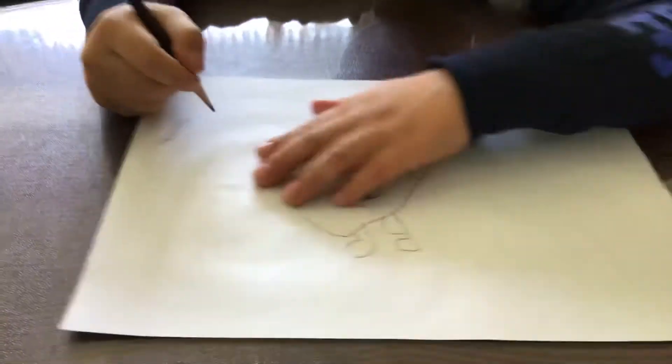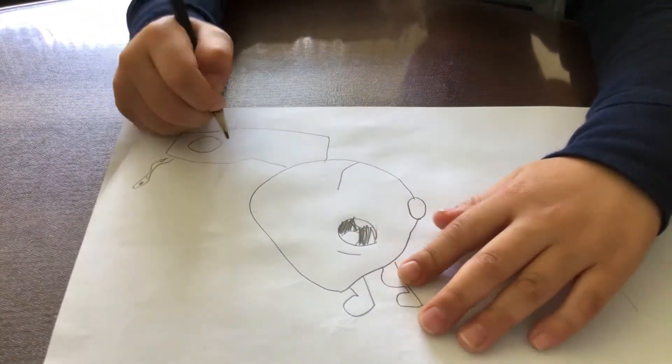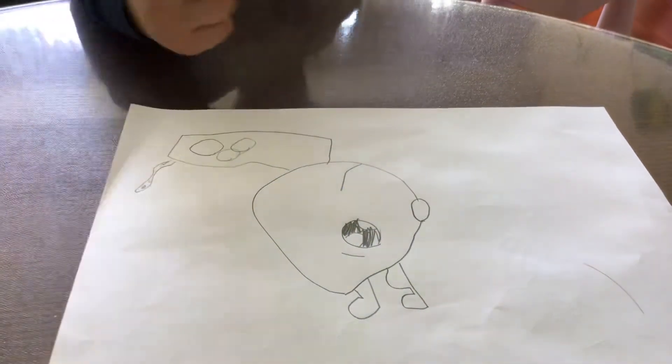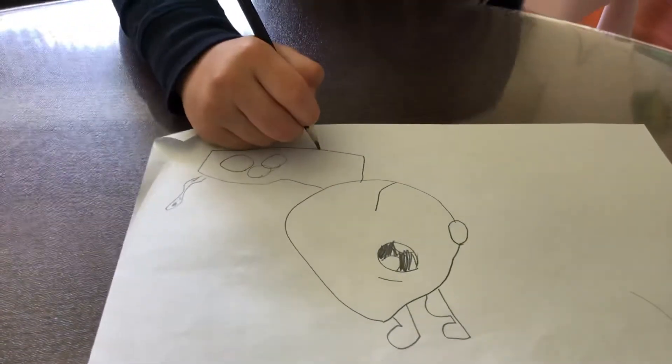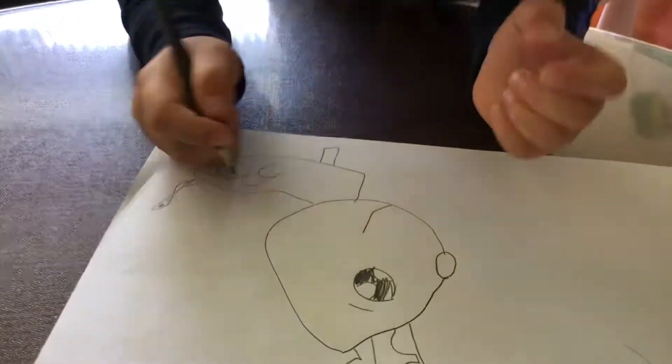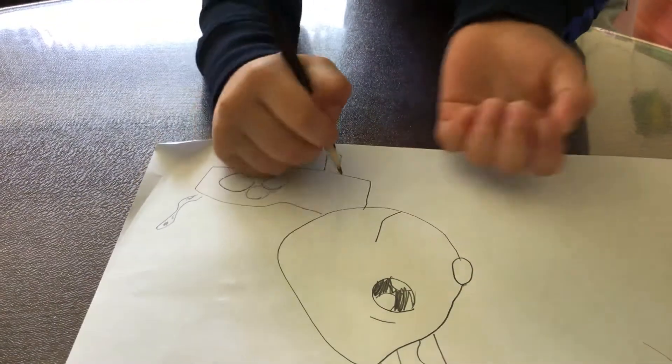And then two, three, three circles. Then we draw his legs, a straight line, like this, and then we draw like this, and then we draw his legs like this.